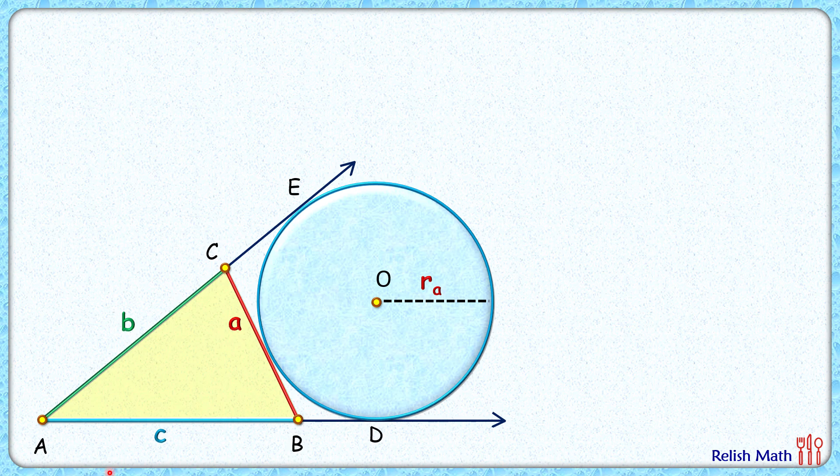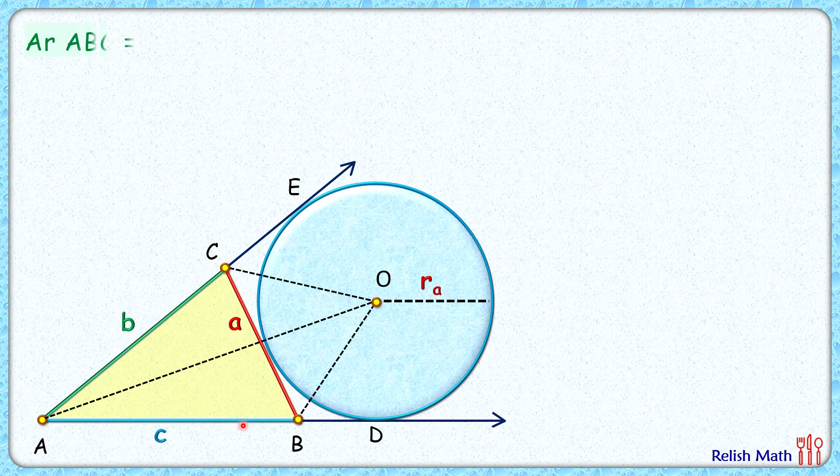Let's check the solution. Let's join all three vertices of triangle ABC to the center. Join AO, BO, and CO. The area of this yellow triangle ABC is nothing but the area of this pink triangle ABO plus the area of this blue triangle COA.